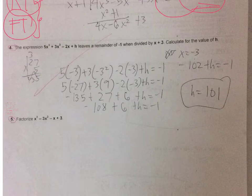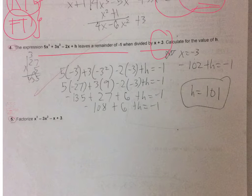Number four: the expression 5x³ + 3x² - 2x + h leaves a remainder of -1 when divided by x + 3. Again, this is all about remainder theorem. Identify the number that will make it zero, so you got it correctly: x = -3. You supply it to every x and then equate it to -1. Good job, you got number four.